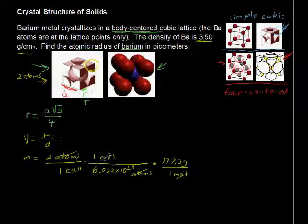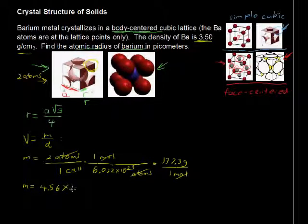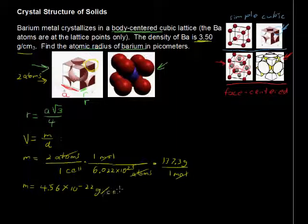So, we cancel out moles, and we get the mass equaling 4.56 times 10 to the negative 22 grams per cell. That's the mass of one of these cells. Now, I've rounded way too early. Of course, you don't round until the end. When I'm doing this, I'm holding on to two more digits than that, but I'm trying to save some space on this writing place.